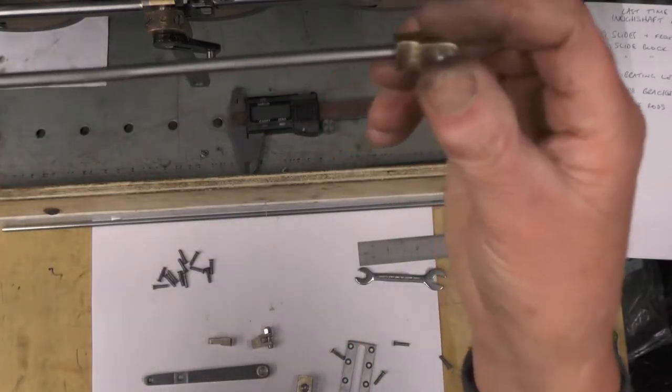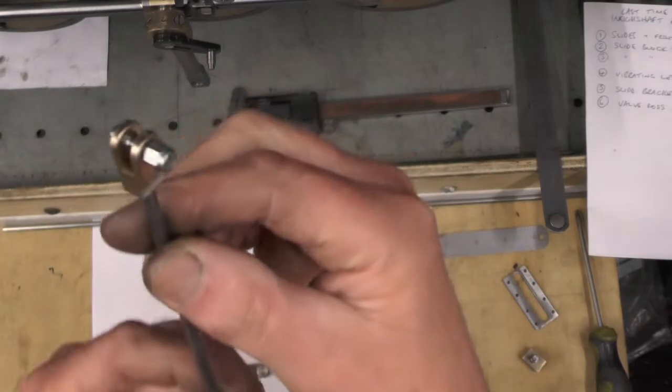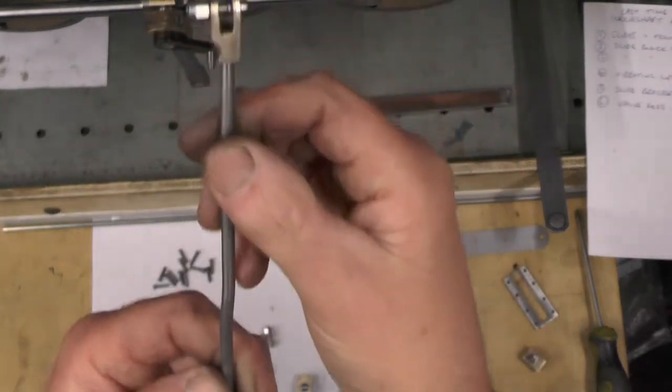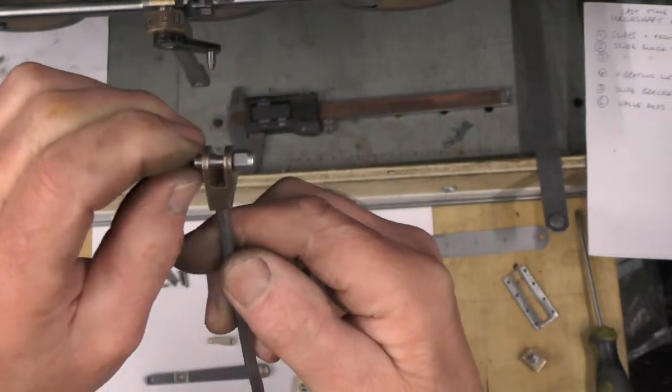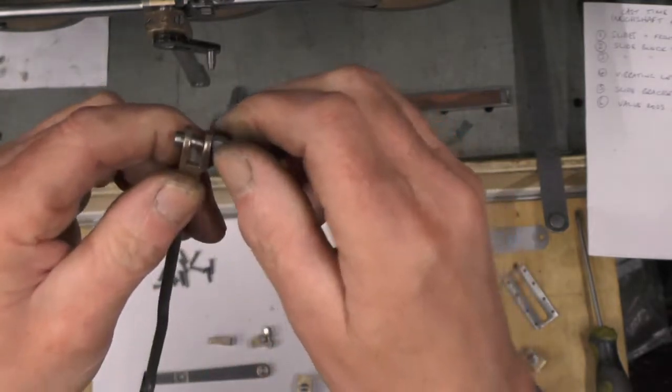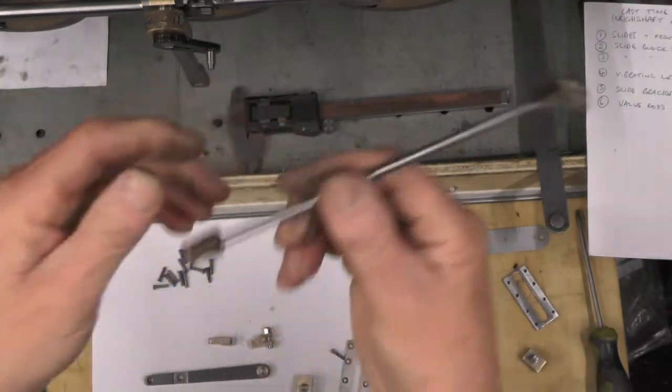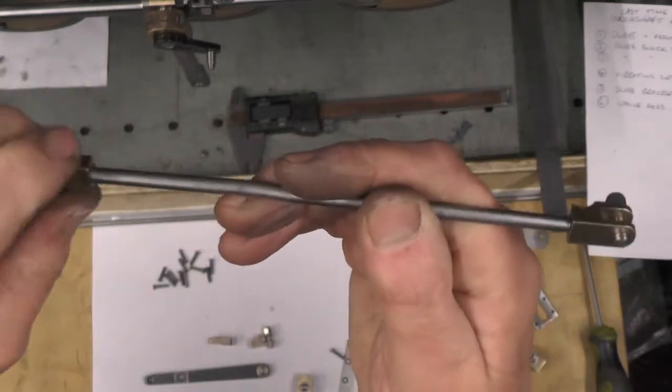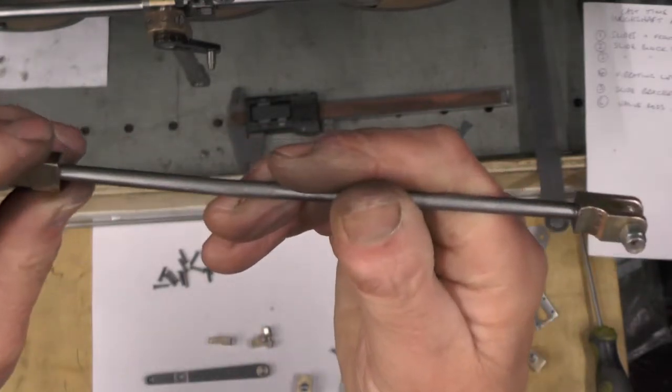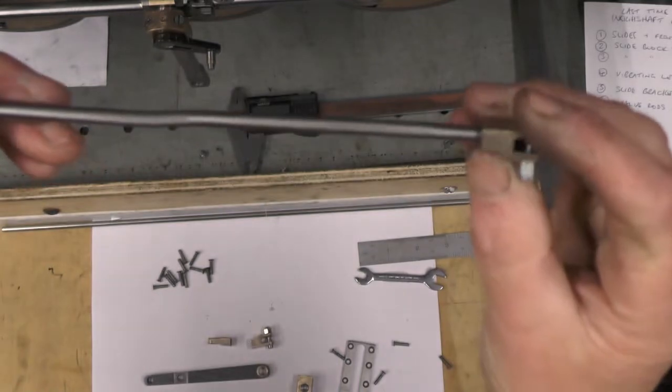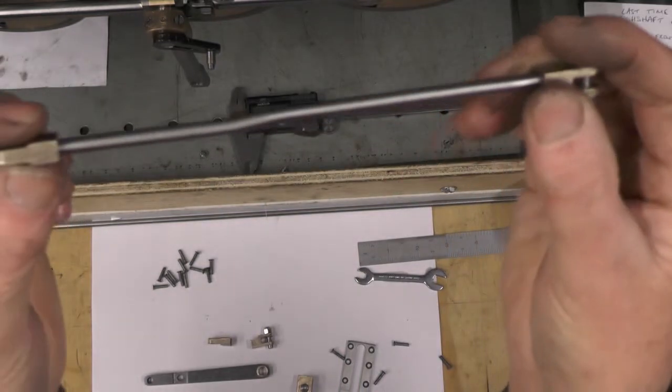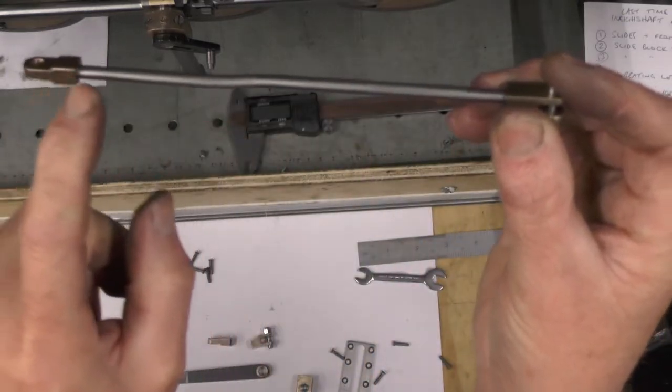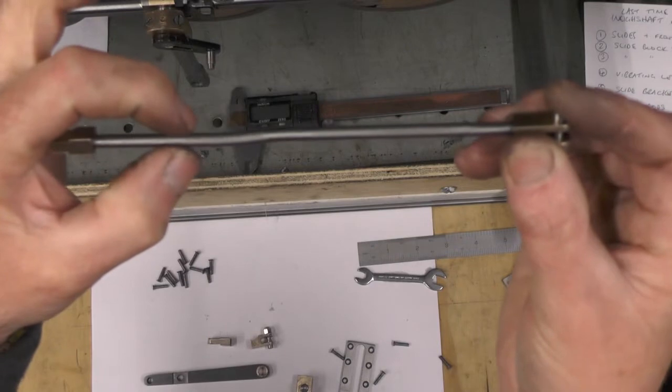There's the valve rod and its clevices. It says make them out of mild steel in the book but I've actually made them out of bronze. That's got a little pivot pin inside it. And it's screwed onto the valve rod with a 2BA thread on each side. And there's a little kink in that valve rod if you can see it - it kinks out like on an S bend by one eighth of an inch.